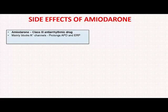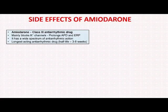Apart from potassium channel blocking, amiodarone also blocks sodium channels, calcium channels, and beta receptors. Therefore it has some effects of all classes of antiarrhythmic drugs, hence it is effective in a wide variety of arrhythmias.